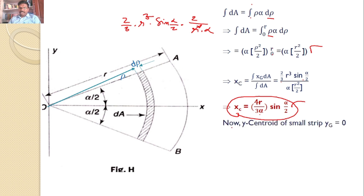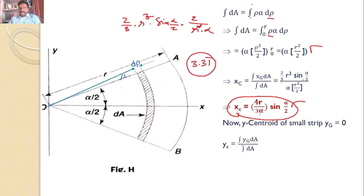The same analysis applies to the y-coordinate. The y-centroid of the small strip, y_g, is 0 — refer to problem 3.31 for this result (link in the description). Therefore, ∫y_g dA / ∫dA = y_c = 0. This is the final answer.